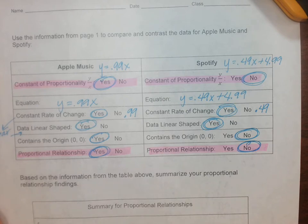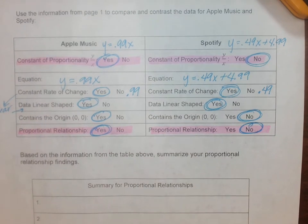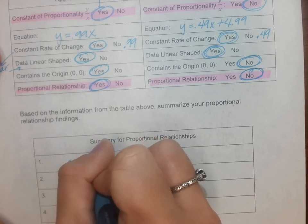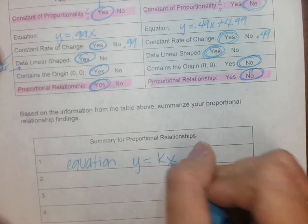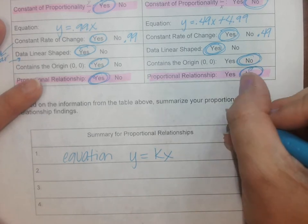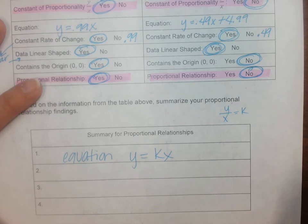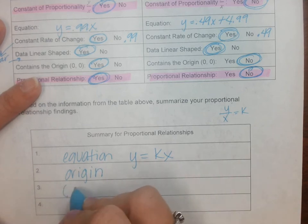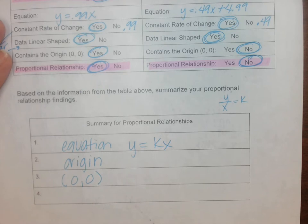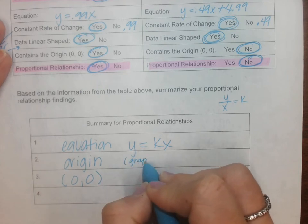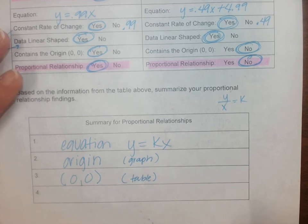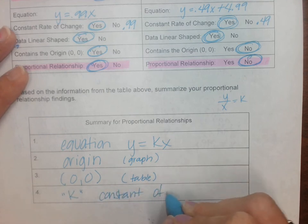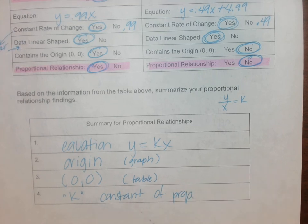Summary for proportional relationships: we want the equation to be y equals kx. Remember that k that we wrote down today - you wrote y divided by x equals k on a note page today. So the equation looks like that, it goes through the origin. This would be like a graph, and then this would be like a table, zero zero. And then we could also say if it has that constant of proportionality. All right y'all, stay safe, be kind.